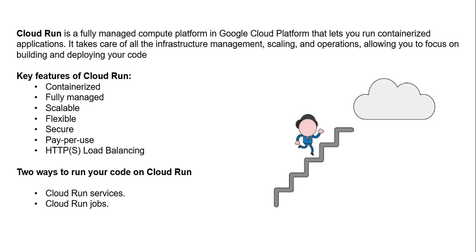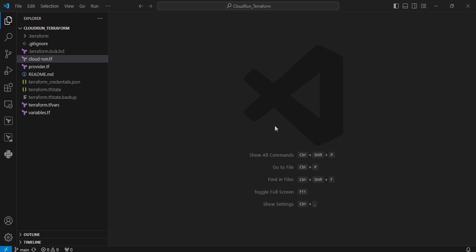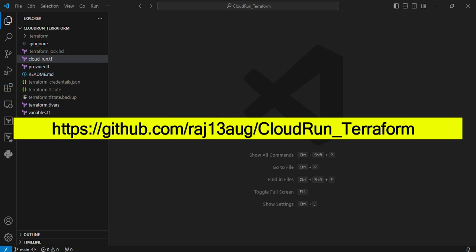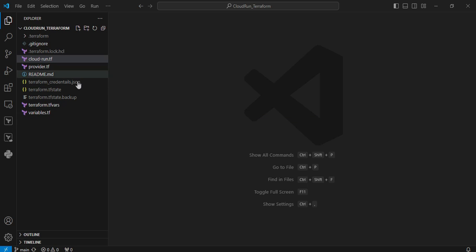Next is Cloud Run Jobs — this is used for performing specific jobs, and they exit when the job is completed. So for time-interval jobs, you can go with Cloud Run Jobs. In this video demo I am going with Cloud Run Service; in upcoming videos I will cover Cloud Run Jobs as well. Moving to Visual Studio Code — the entire source code is available on my repository and you can clone it anytime.